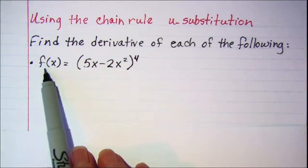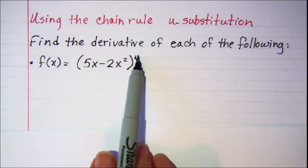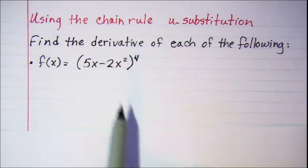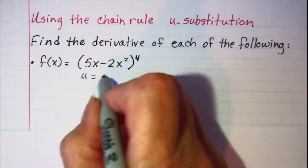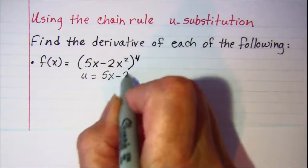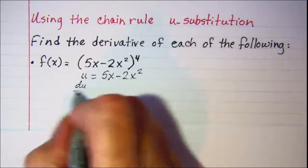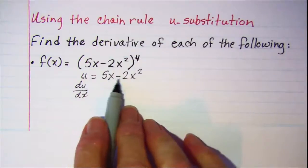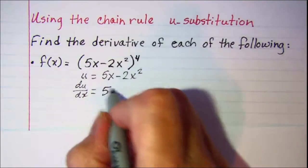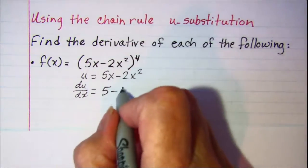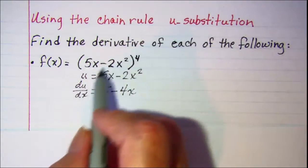Our first one is f equals the quantity 5x minus 2x squared, raised to the fourth power. For u-substitution, we will let u be this inside function, so u equals 5x minus 2x squared. Then du/dx, since our expression is in x,